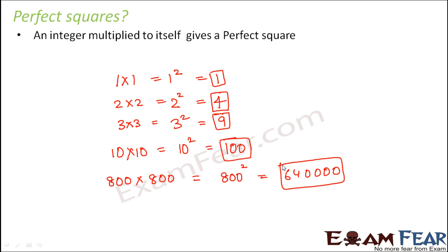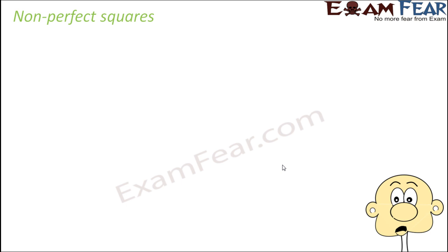Now the question is, why have we given the name 'perfect square'? Is it that not all numbers are perfect squares? We have seen examples like 1, 4, 9, 16, 100, 6,40,000 and so on. But not every number is a perfect square — only some numbers are. That is why we have given this special name to these numbers. So let's see what non-perfect squares are.